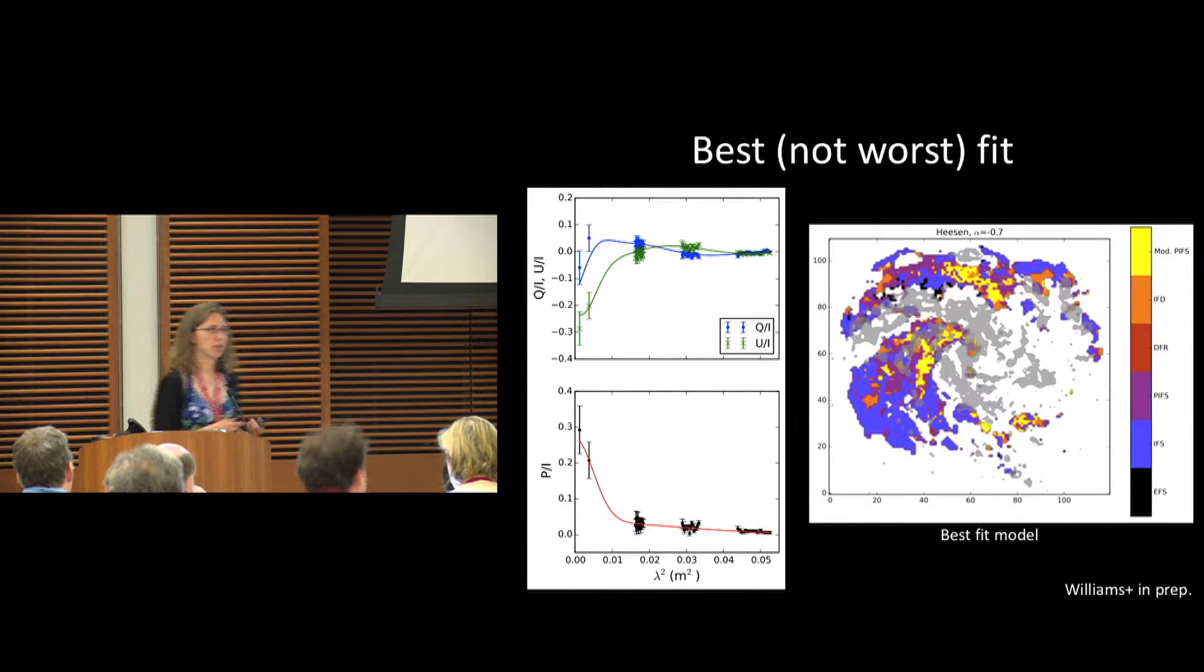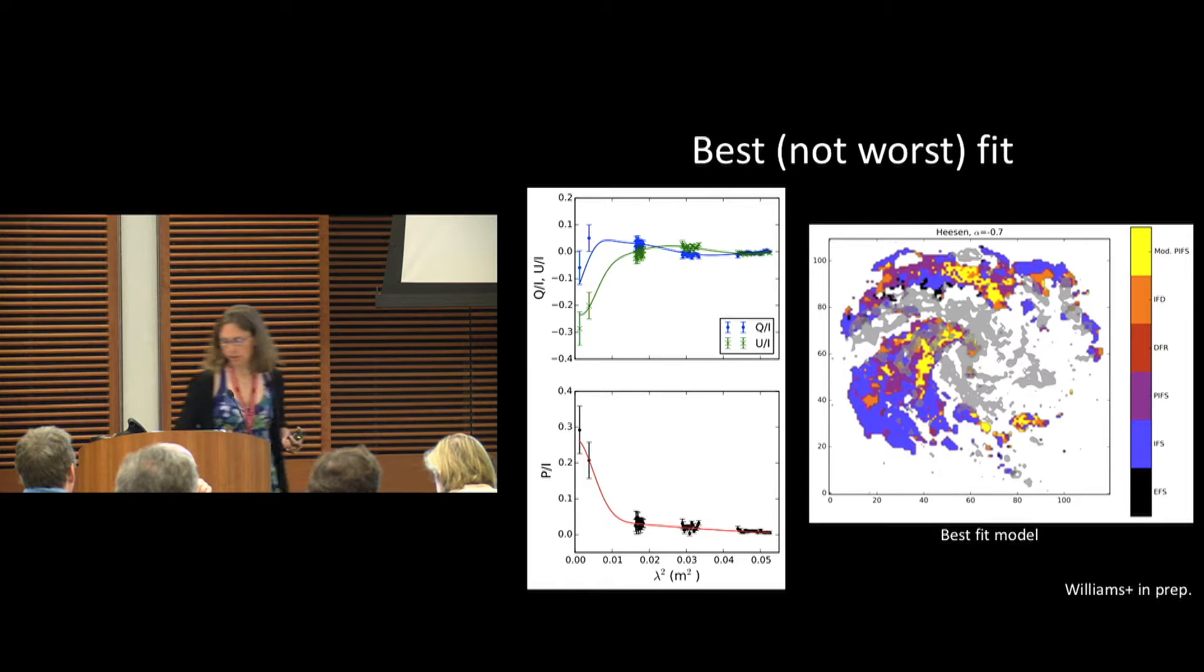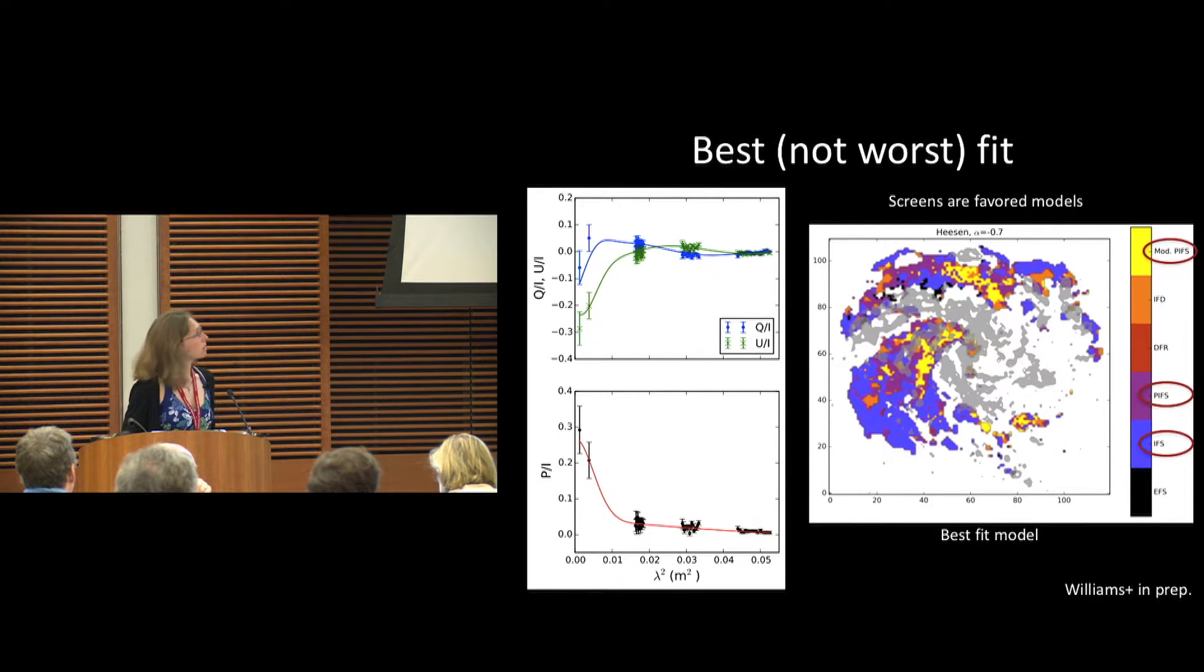What we found is that the not-worst fit for our models tends to be screened. I was talking about this emitting and rotating regions being combined, but it seems that the best models tend to be screened models.